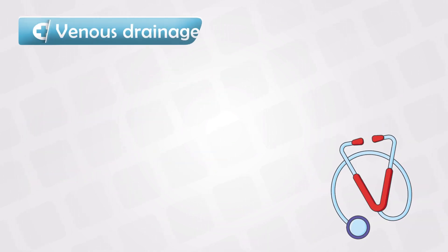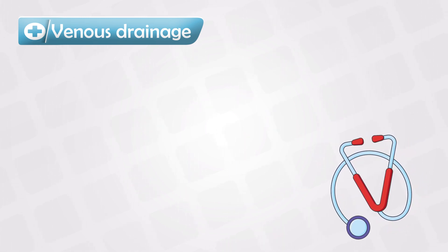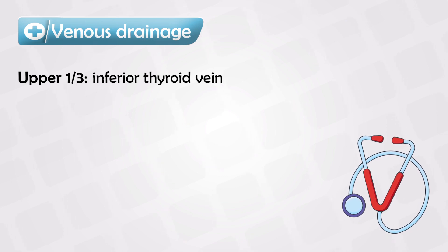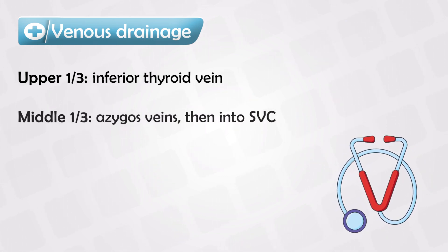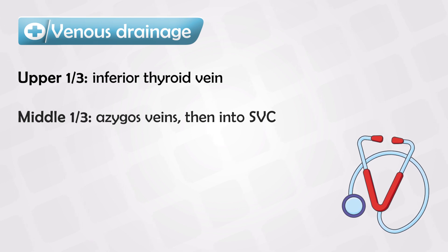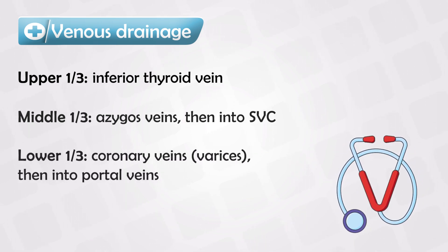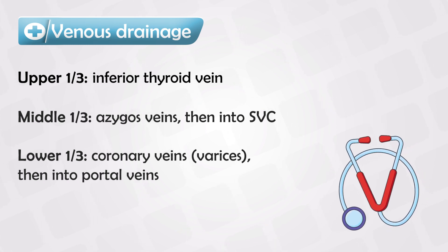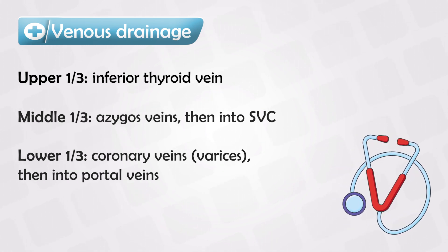The esophagus blood drainage — the veins — are also different. The upper part drains into the inferior thyroid vein, the middle into the azygous vein, which drains directly into the superior vena cava, and the lower drains into the coronary veins, which drain directly into the portal vein. The lower part is, of course, where we see varices.